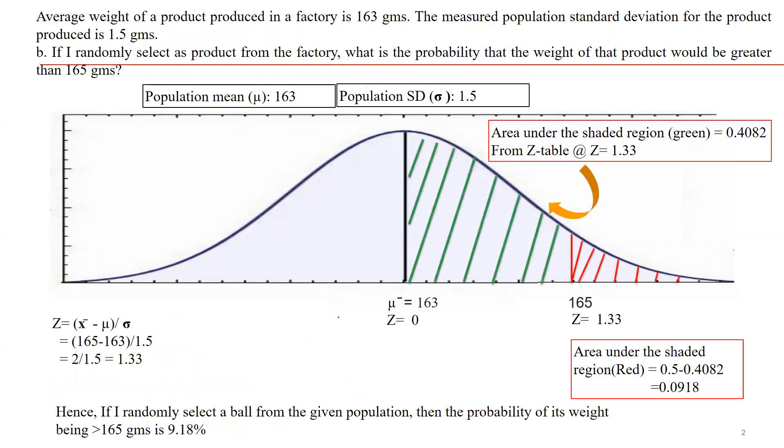Now the question is: if I randomly select a product from the factory, what is the probability that the weight of that product would be greater than 165 grams? What is the probability the weight of that particular product would be greater than 165 grams?